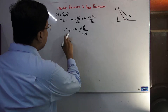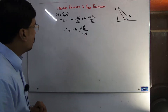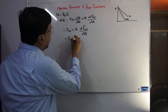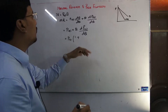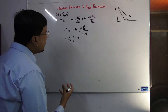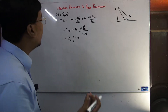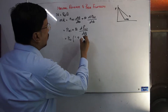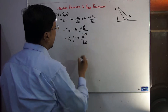Now if we take P as common from this expression — P is present in the first term but not in the second term (dP/dQ is a derivative, not P itself). So when taking P as common from a term where P is not present, we must introduce P in the denominator to maintain balance, and divide by P below.